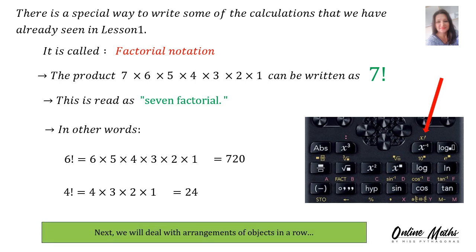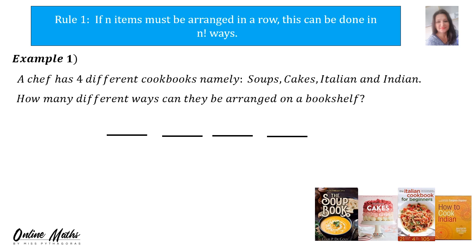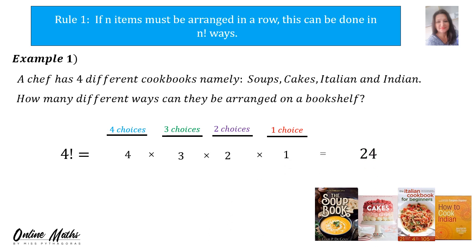Next, we will deal with arrangements of objects in a row. Rule 1: if n items must be arranged in a row, this can be done in n factorial ways. Example 1: a chef has 4 different cookbooks — soups, cakes, Italian and Indian. How many different ways can they be arranged on a bookshelf? You give yourself 4 pigeon holes. In the first pigeon hole there are 4 choices, then 3, 2, and 1. That is 4 factorial, which is 4 times 3 times 2 times 1, equal to 24.